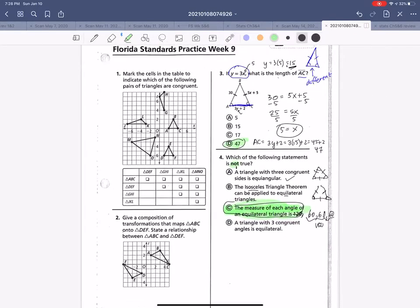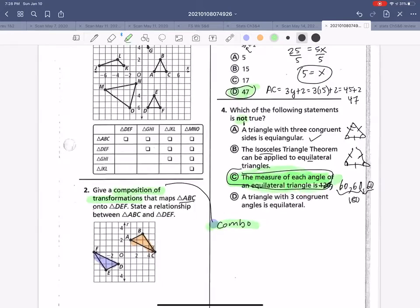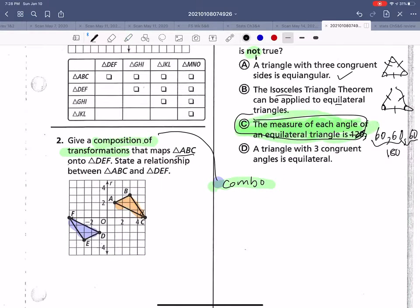Given a composition of transformation, so what is a composition? It's a combo, meaning it's a combination of more than one. So it would map ABC. This is our original shape, right? So we started here and we ended up here and I have to get there in two steps or more. State the relationship between A and B. Well, if a given transformation does get there, we know that they are congruent.